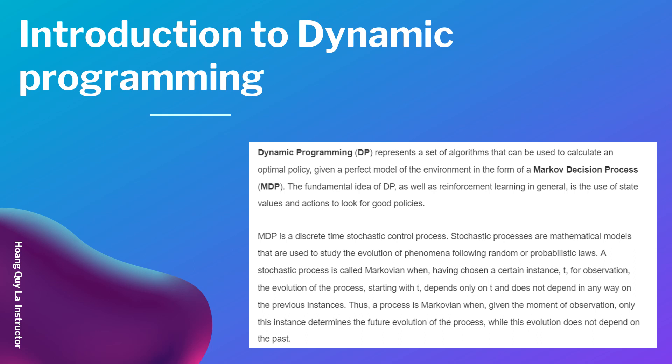Now let's talk about dynamic programming. Dynamic programming, or DP, represents a set of algorithms that can be used to calculate an optimal policy given a perfect model of the environment in the form of a Markov Decision Process, or MDP. The fundamental of dynamic programming, as well as reinforcement learning in general, is the use of state values and actions to look for good policies.